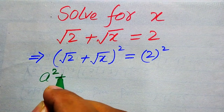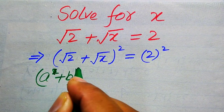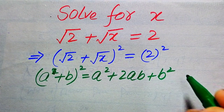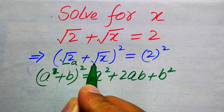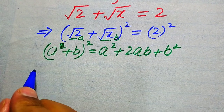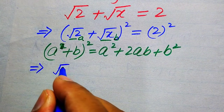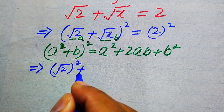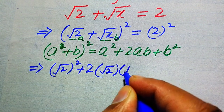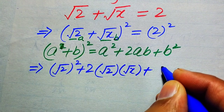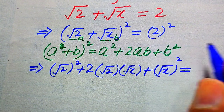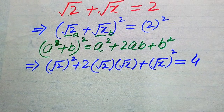In the next step we need to use the algebraic formula: (a + b)² = a² + 2ab + b². Here this term is our a and this term is our b. So after applying the formula, the left-hand side becomes: square root of 2 whole squared, plus 2 times square root of 2 times square root of x, plus square root of x whole squared, equals 2 squared, which is 4.